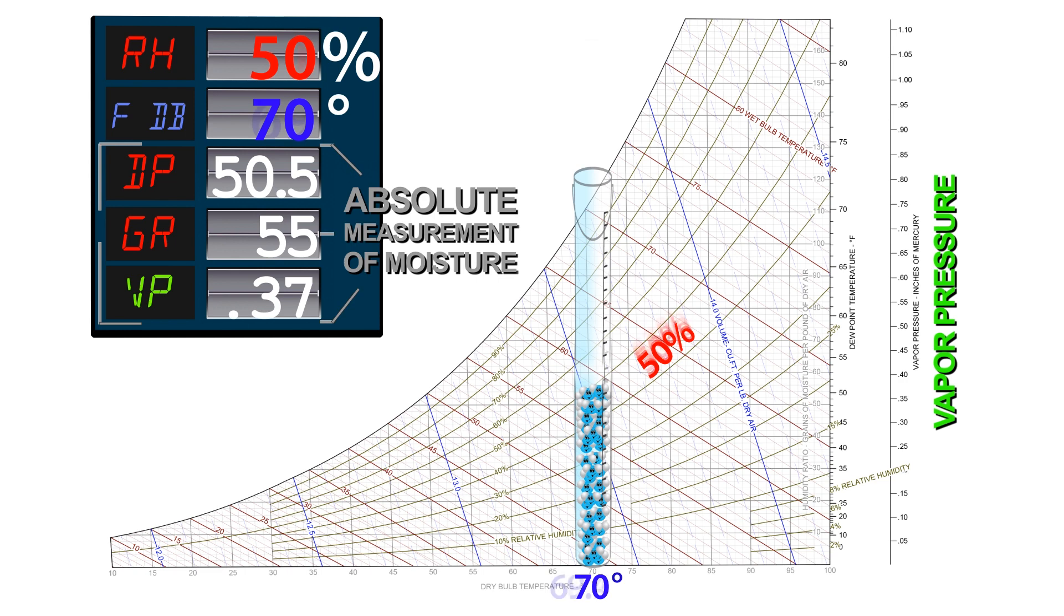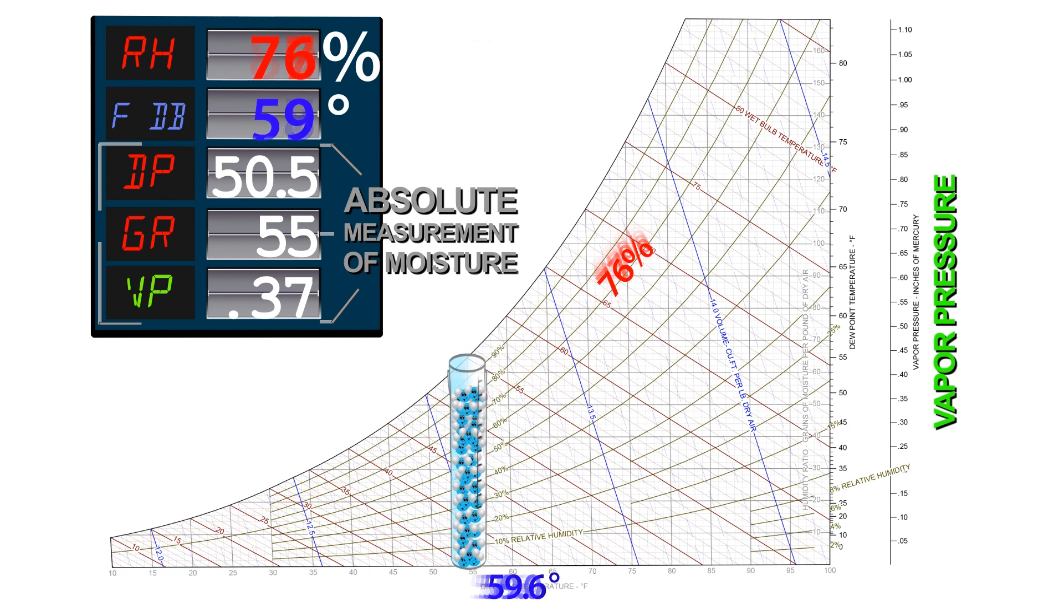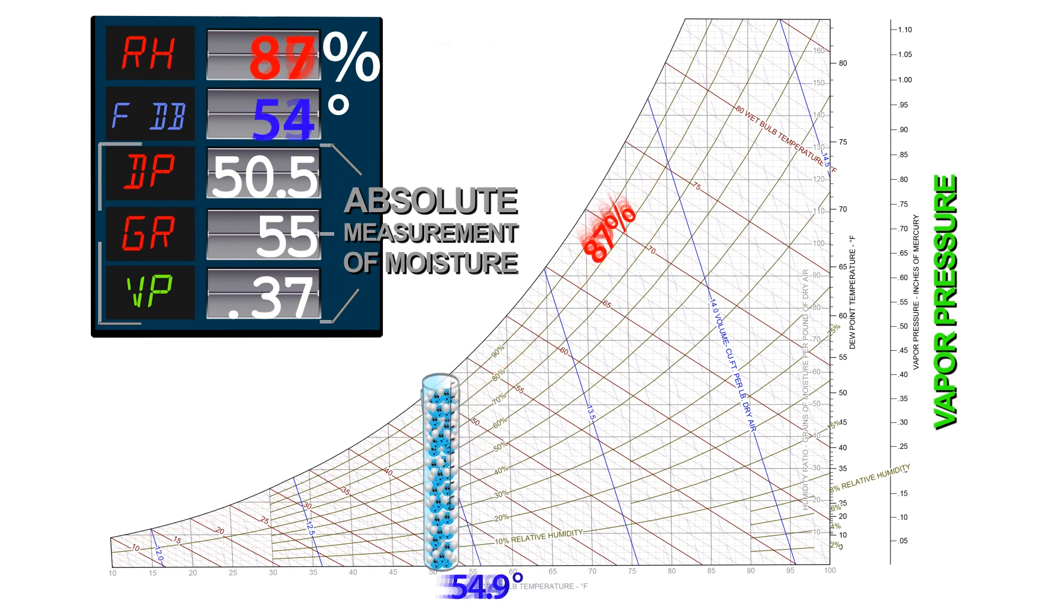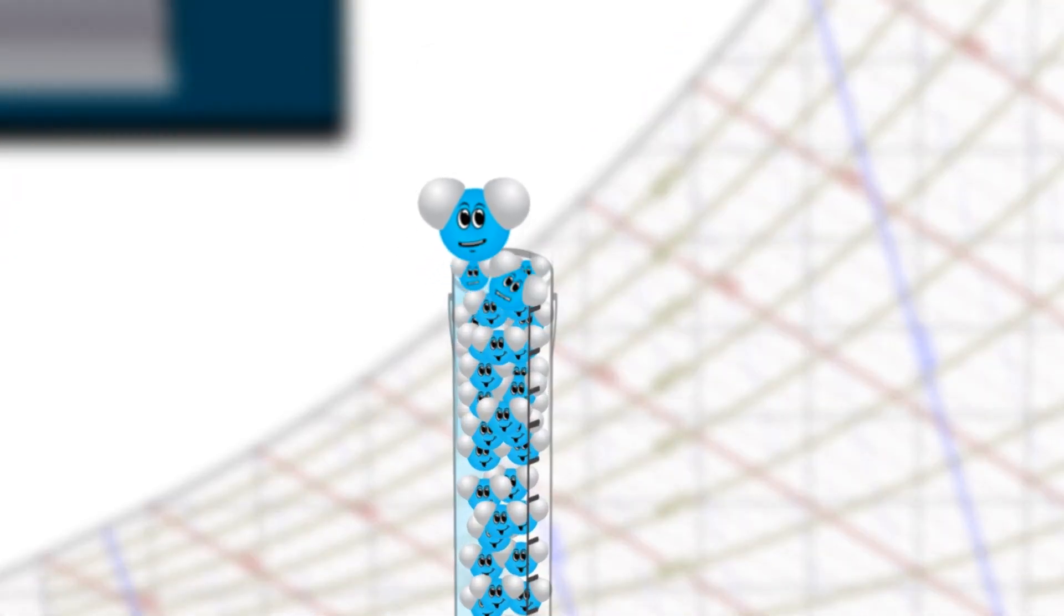And if we keep cooling that air all the way down to just the place before dew point where the dew falls out. In our example today, that is 50 and one half degrees Fahrenheit. We are now at 100% relative humidity. The air cannot hold any more water. Keep cooling the air and... Time to change state. It's condensation time.